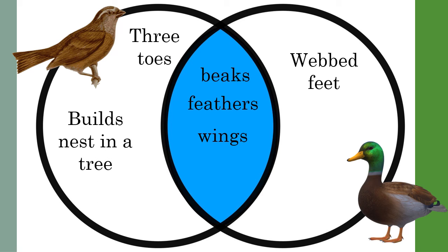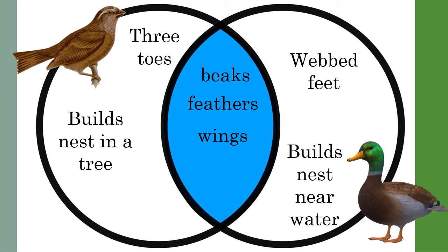The sparrow builds nests in a tree whilst the mallard builds a nest in water. Why do you think they are different? The sparrow builds a nest in a tree where it is safe from predators, while the mallard builds a nest in water where it is easy to reach food.